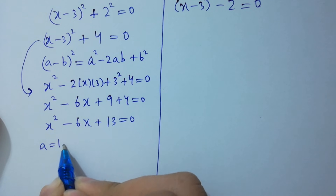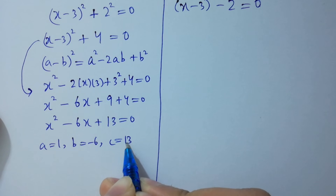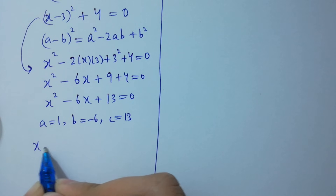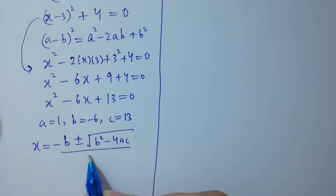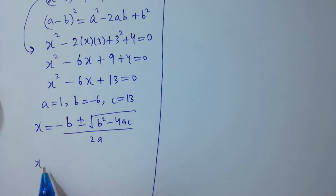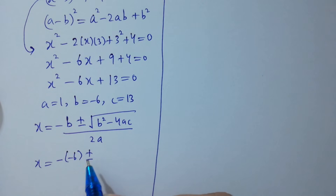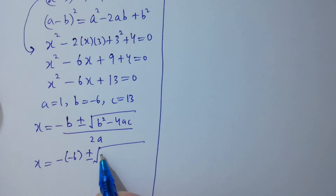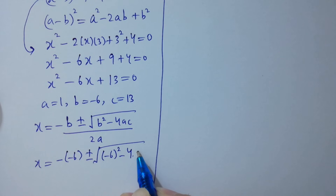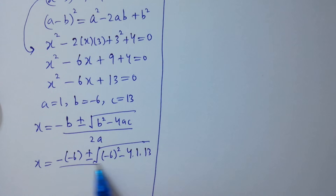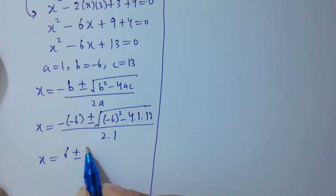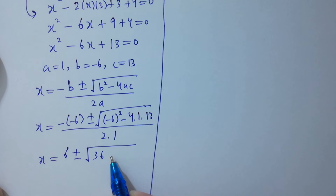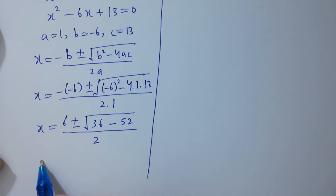Where a equals 1, b equals minus 6, c equals 13. Applying the quadratic formula x equals (minus b plus or minus square root of b² minus 4ac) over 2a: x equals (6 plus or minus square root of (minus 6)² minus 4 times 1 times 13) over 2, which gives x equals (6 plus or minus square root of 36 minus 52) over 2.